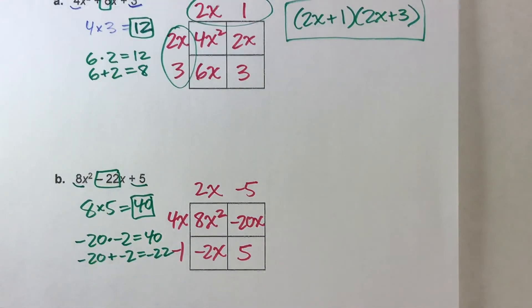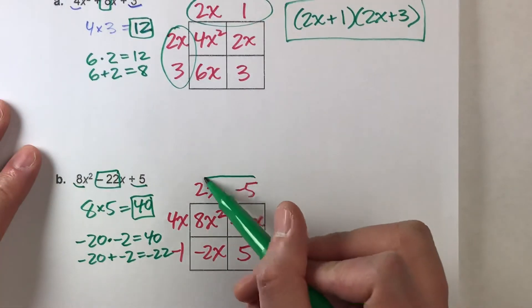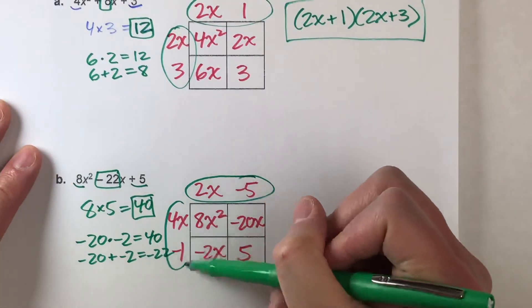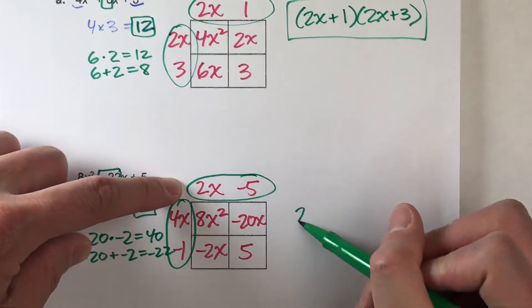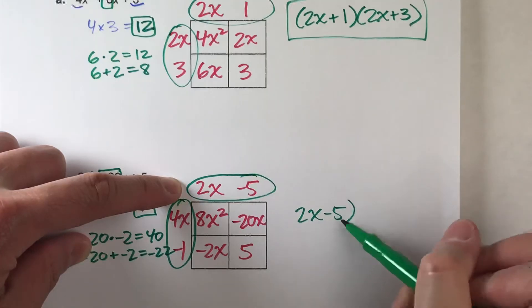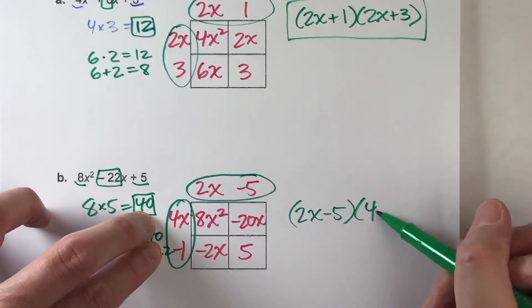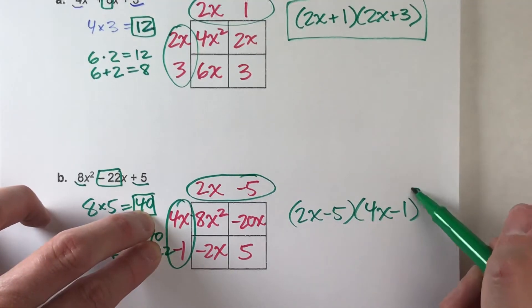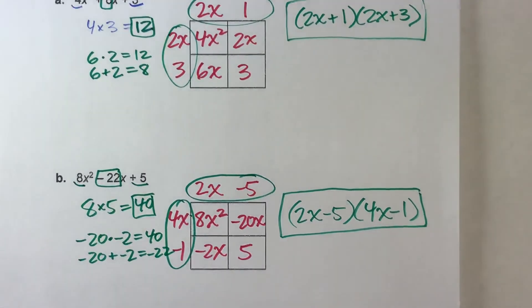So, we're almost done. To write the expression in factored form, we just look at length times width. Here we go. 2x minus 5 is one side of the rectangle, times 4x minus 1 is the other side. This is our factored form.